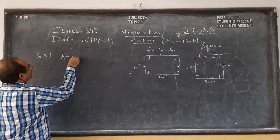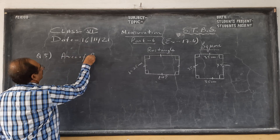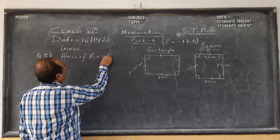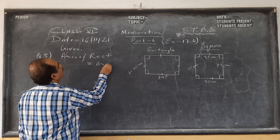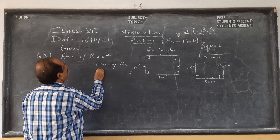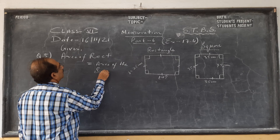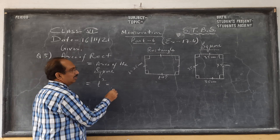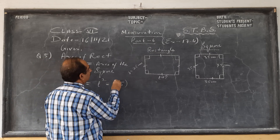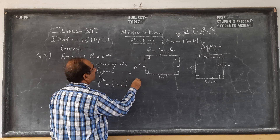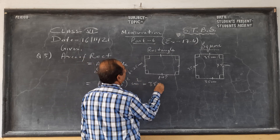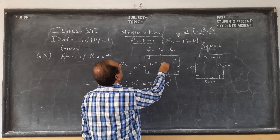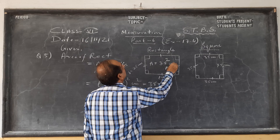Area of rectangle equals area of square. Now, area of the square is L squared. If the side is L, it is 35 squared centimeter square, which is 35 into 35. So area of the square is 35 squared, and area of the rectangle is also equal to 35 squared.